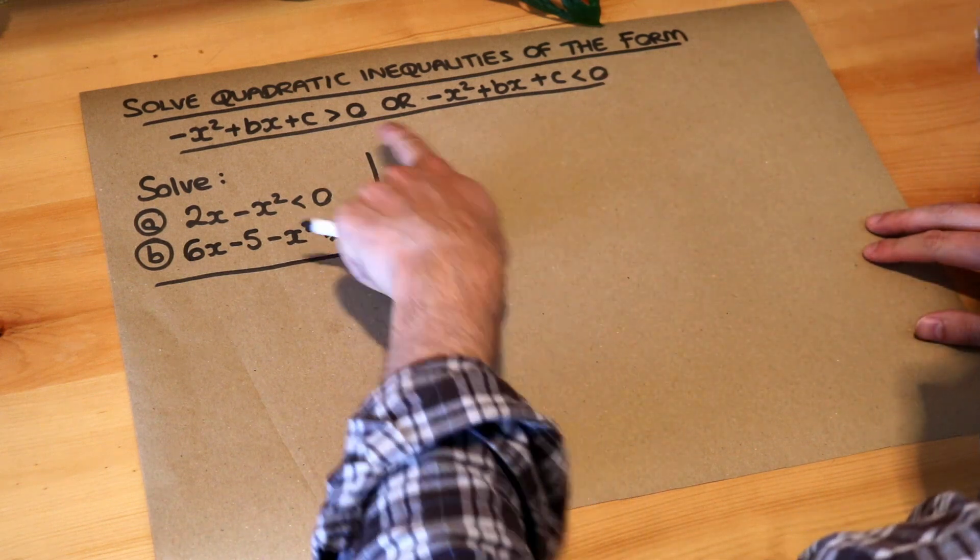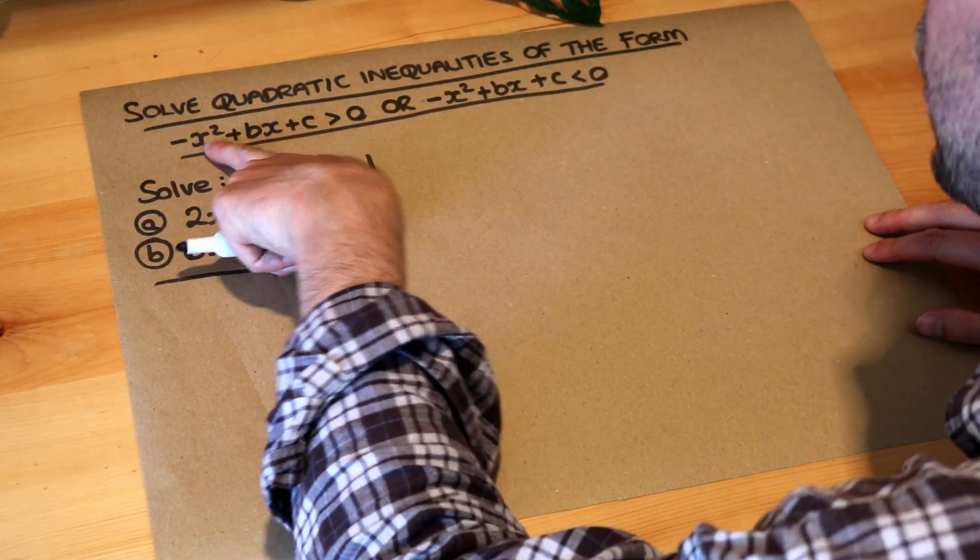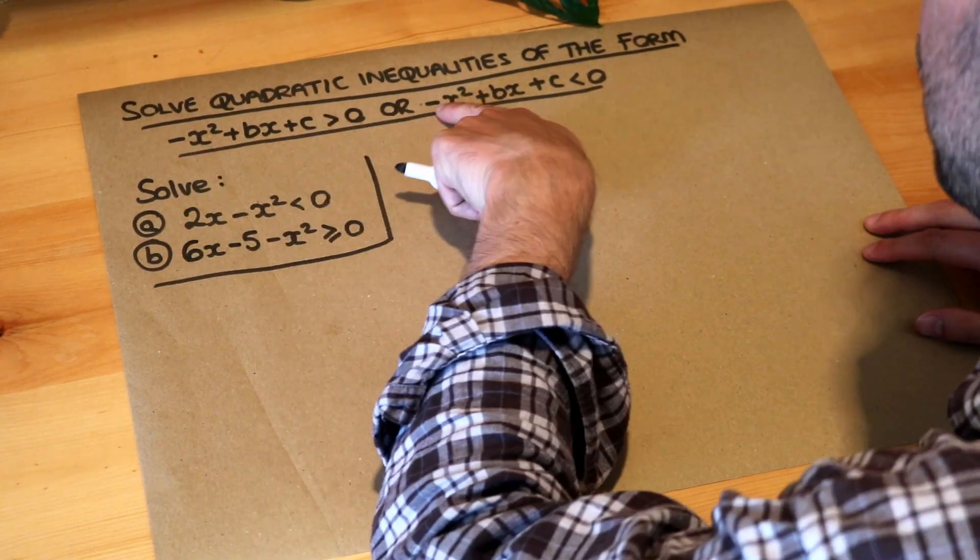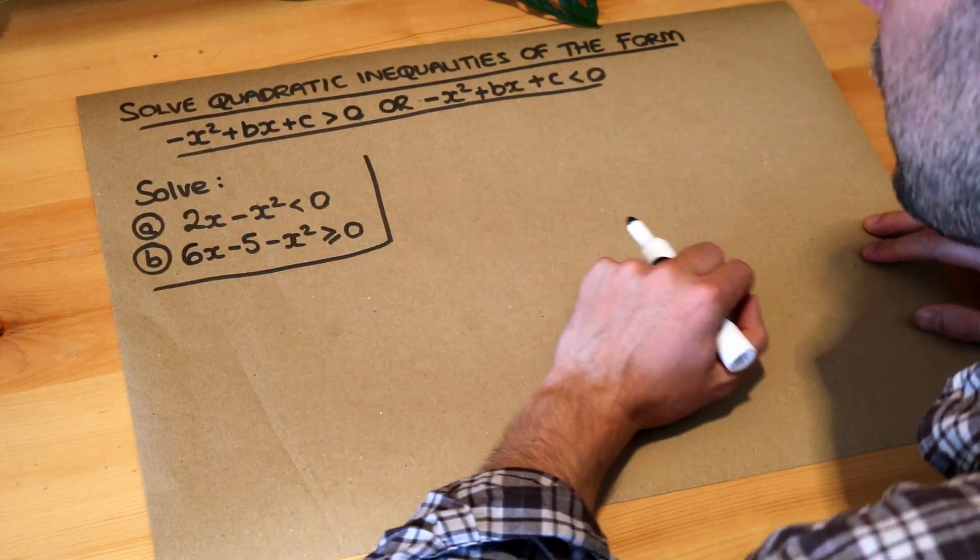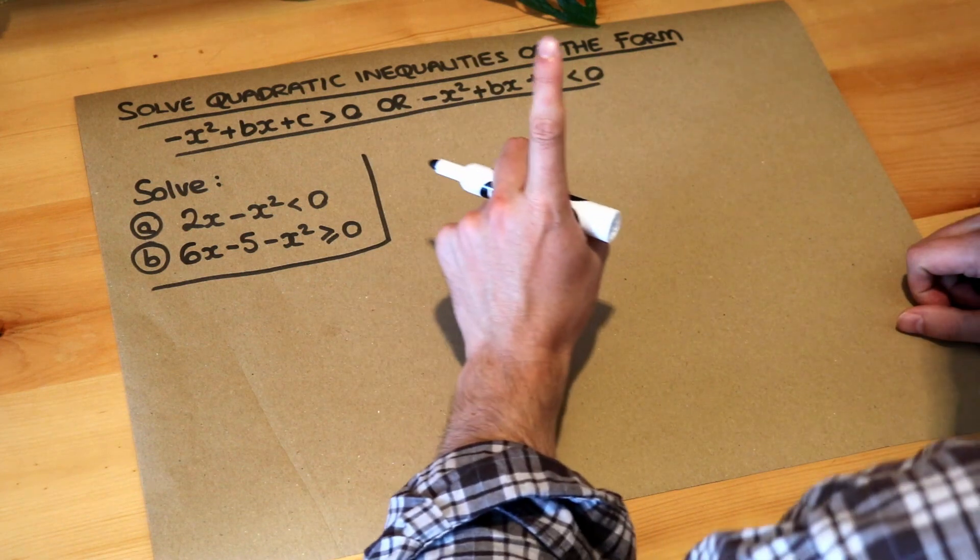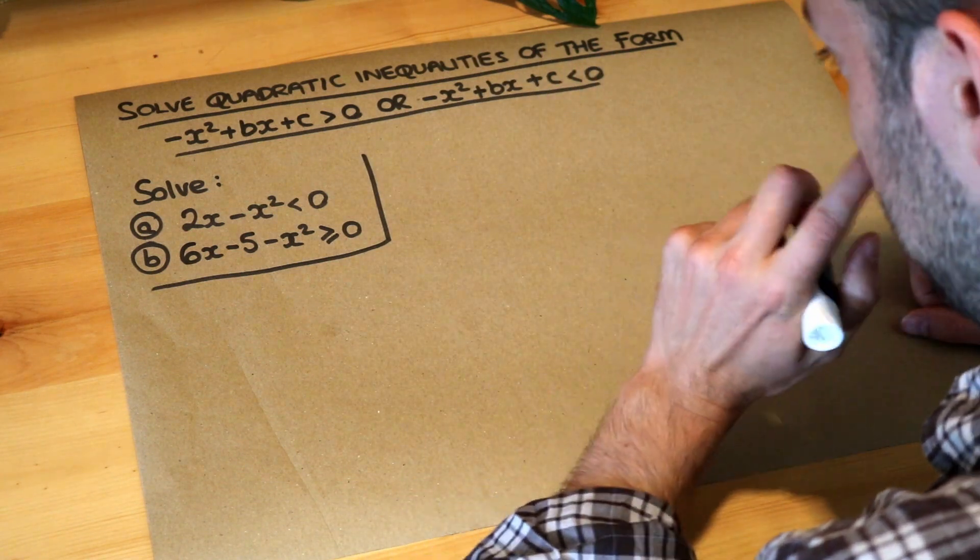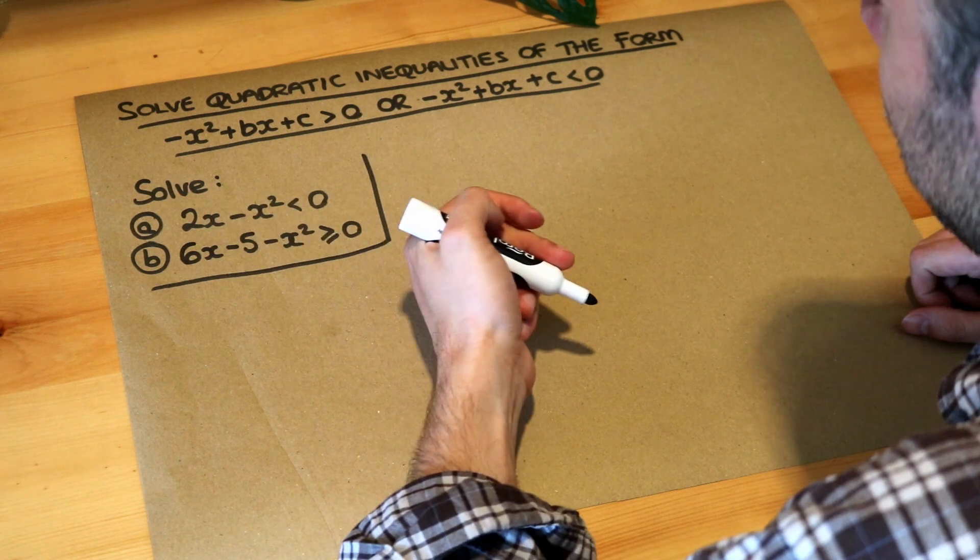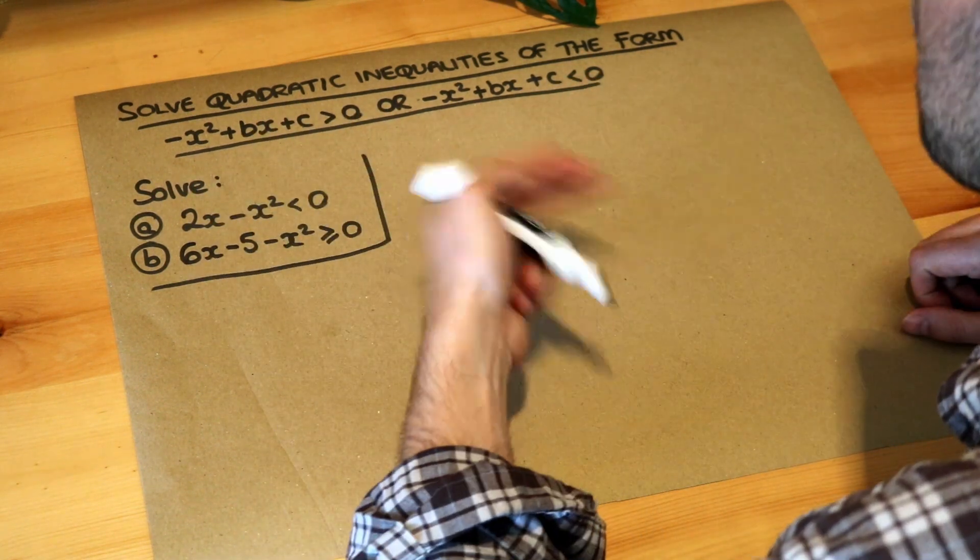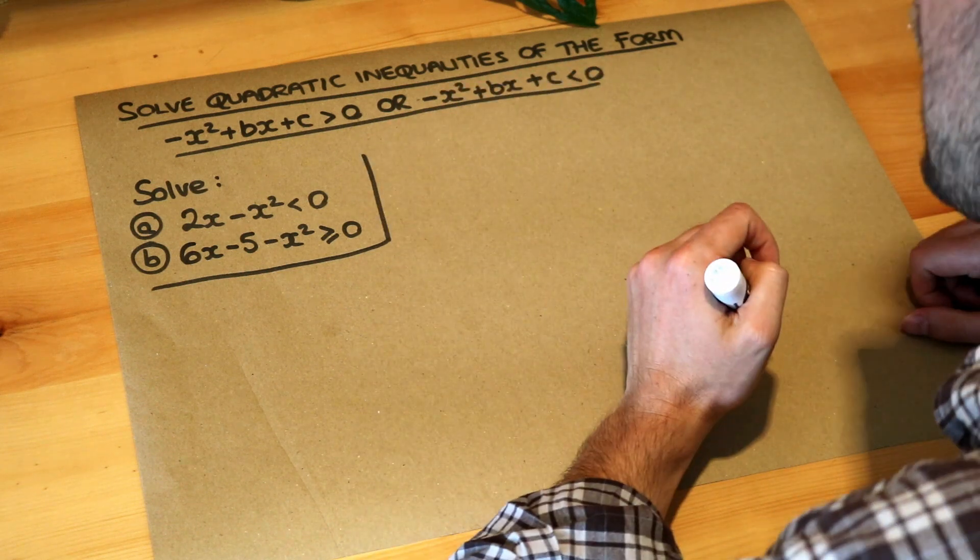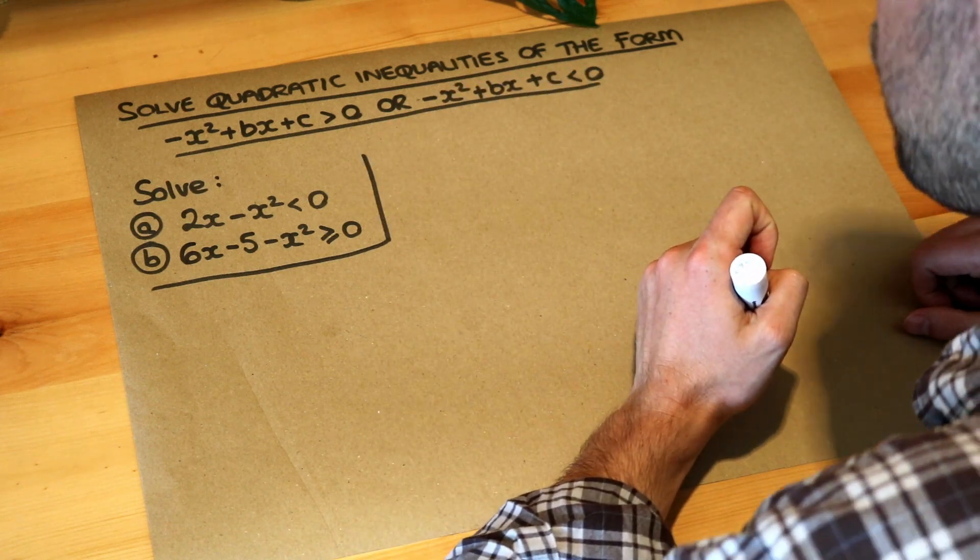In this case we're dealing with quadratic inequalities where the x squared term is negative, so it's minus x squared. Now there's just one additional first step that we're going to do here, and that is basically to turn it into a quadratic inequality where the x squared is not negative because then we know from previous videos how to handle those kind of questions.